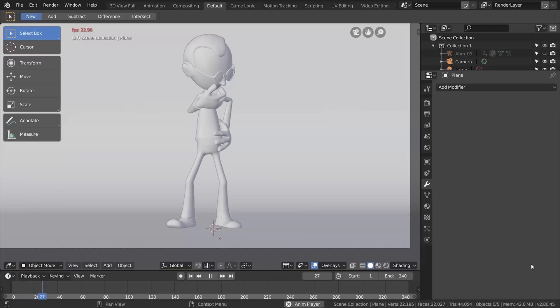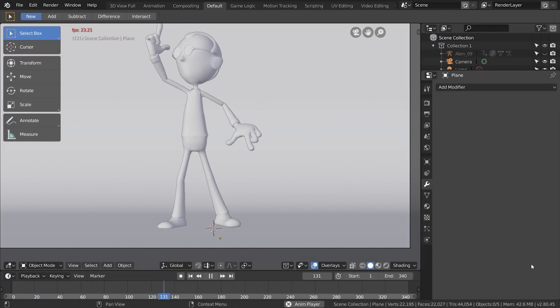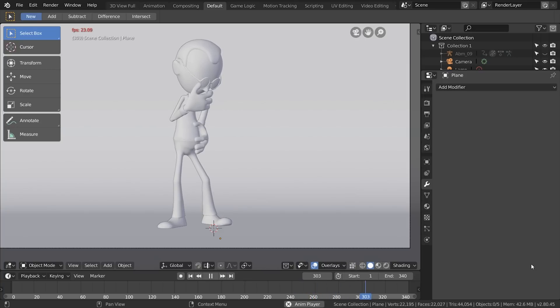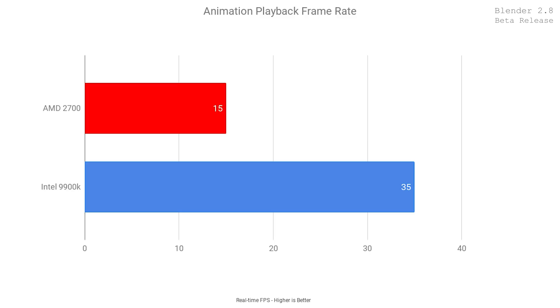Then I moved on to an animation playback benchmark, where I have a character rigged and moving around to see what kind of FPS you get playing back animation in Blender's viewport. The Ryzen system came in at 15 FPS, whereas the Intel system came in surprisingly at 35 FPS — about 80% faster real-time animation playback. Whatever is going on in Blender, it currently runs a lot better on the i9-9900K. That's something to keep in mind if you're doing a lot of animating.